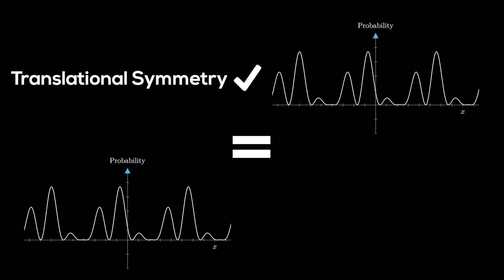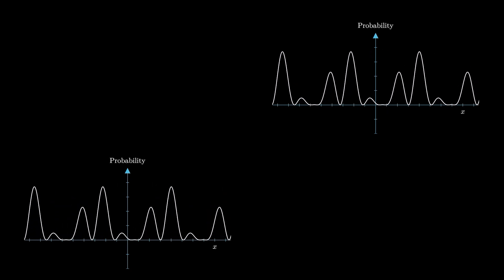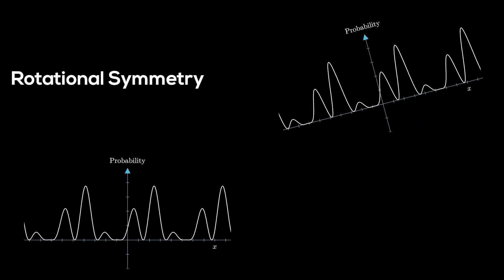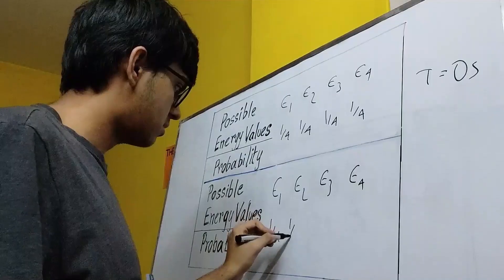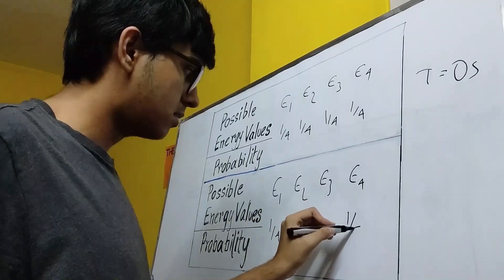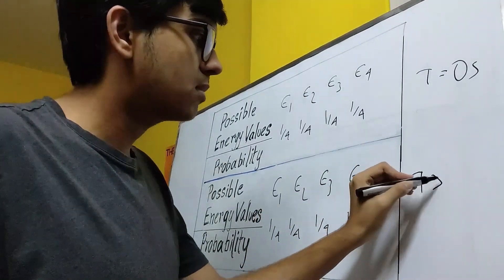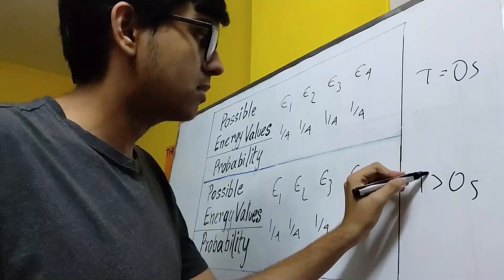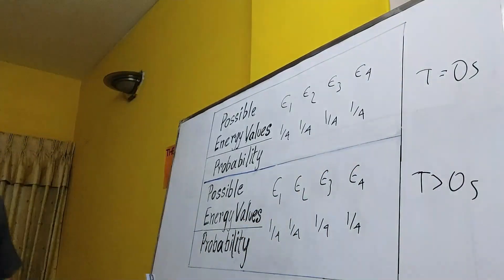The same principle applies for rotational symmetry, given the wave function experiences the same time evolution. Here, time translation symmetry applies when the average expected value, or the mean, of the energy of the wave function remains the same, even after time evolution, and this implies conservation of energy.